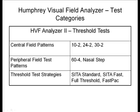There are a number of different threshold tests and strategies. The central field patterns are typically most common; the ones we usually order are either the 24-2, 30-2, or central 10-2 test patterns. For glaucoma, the 24-2 is usually the most commonly used. There are also peripheral tests, and a number of different test-taking strategies — either SITA standard, SITA fast, full threshold, or FASTPAC — all differing in the way that threshold is bracketed.